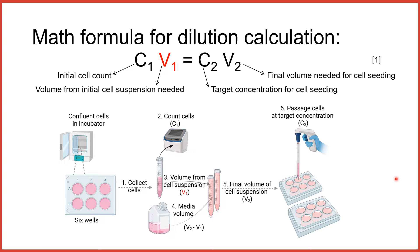The formula for calculating how much volume from the cell suspension and fresh media need to be combined to seed the cells — the dilution calculation — is shown here as C1V1 equals C2V2, where C1 is the initial cell count, V1 is the volume from the initial cell suspension that needs to be diluted, C2 is the target cell seeding concentration, and V2 is the final volume needed for cell seeding.